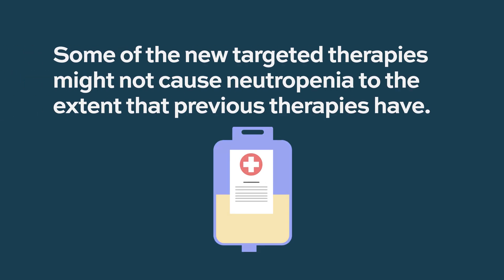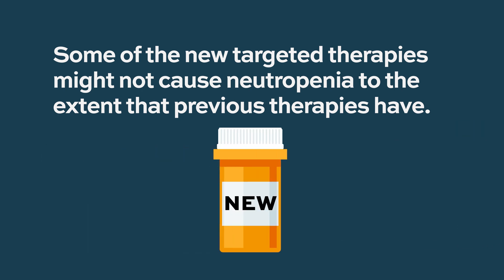The timing can depend on the therapy and when you receive it. Because of advances in AML treatment, there is a plethora of new treatments available. Some targeted therapies may not cause neutropenia to the same extent as chemotherapy. With chemotherapy, neutropenia typically occurs around seven to ten days after starting therapy — usually the week after chemotherapy is completed, so there is a delayed effect.